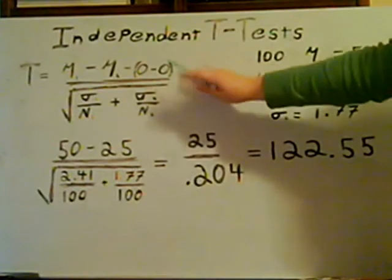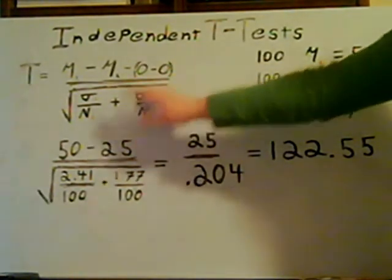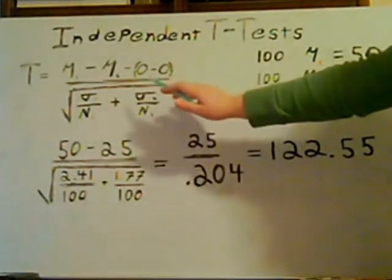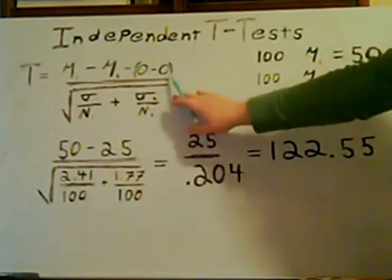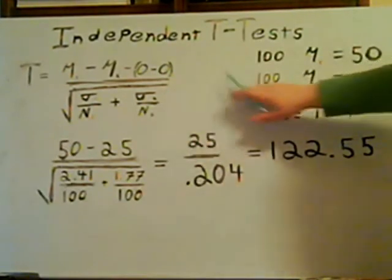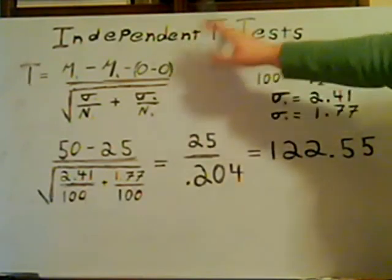All of this is divided by the square root of the standard deviation divided by the number for group A, plus the standard deviation divided by the number for group B, and all that has to be square rooted. And then you can divide the top part.